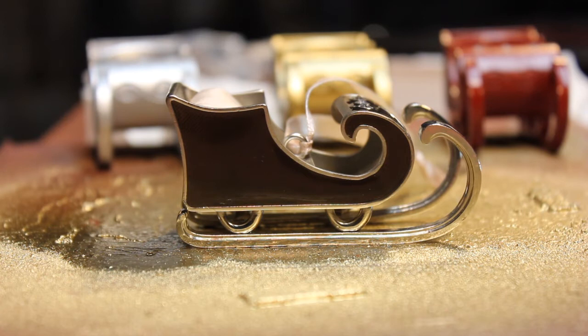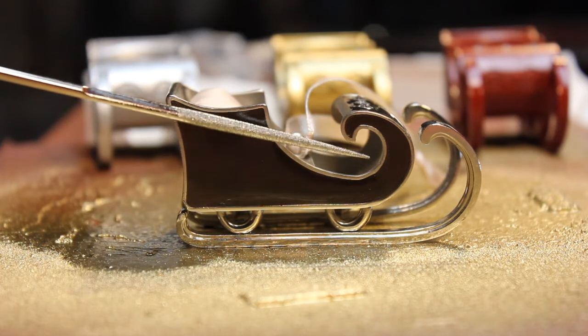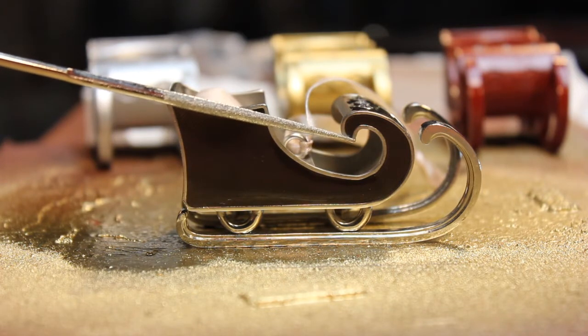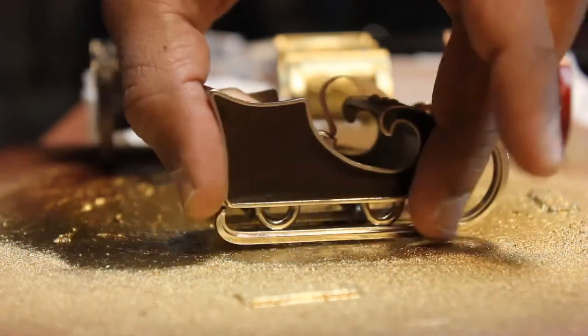The first problem I saw was this overhang here—the little swirly part. As this is printing up, there's no way it's going to print without generating supports. So this orientation is not going to work.